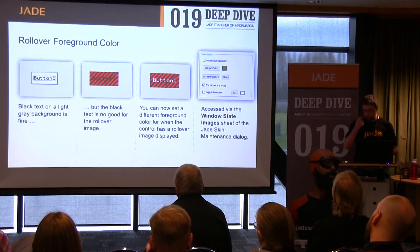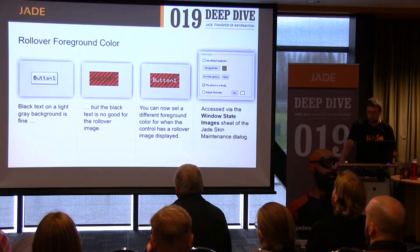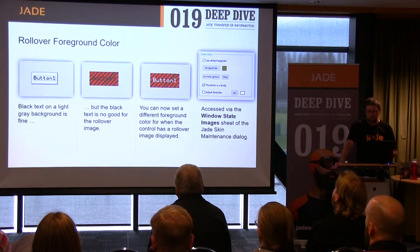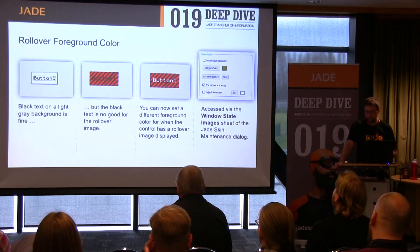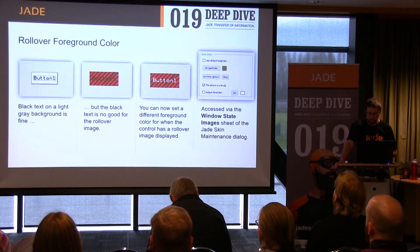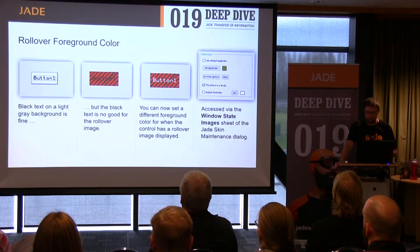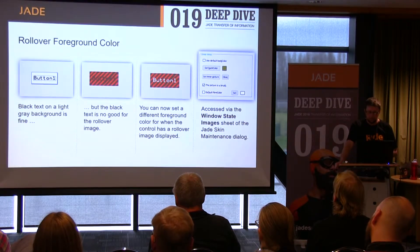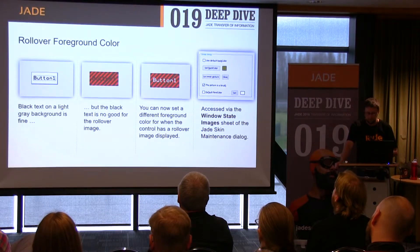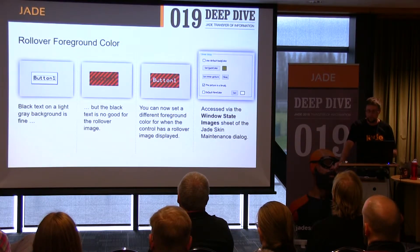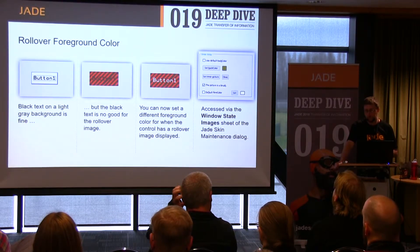In order to accommodate skin designs that prefer a dark fore color for buttons in a particular state, the jade skin window state image class has a new integer property named fore color, which defines the color of the text for a defined window state of a button, folder, sheet tab, or jade mask. The default value is transparent, so by default no fore color is applied to the control's text color by the window state. This property is controlled via the window state images sheet of the jade skin maintenance dialog. For example, when the mouse is moved over a button and an image rollover value is defined for that state, the text is drawn using the fore color property value, when it is not the default transparent value.